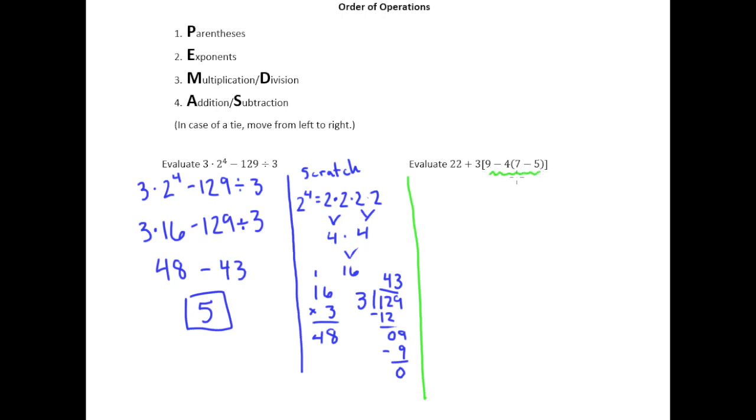But then within those brackets we understand what to do first. We're supposed to do parentheses first. So what's going to happen here is we're going to rewrite everything, and the only thing we're changing is we're going to take care of those parentheses. 7 minus 5 is 2. I'll go ahead and keep it in parentheses because remember that having a number in parentheses next to another number indicates multiplication.